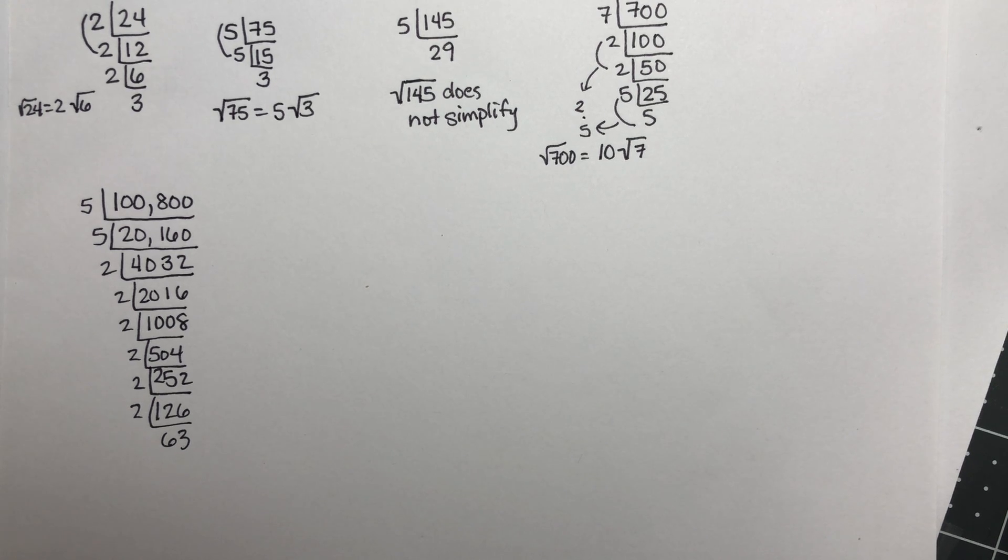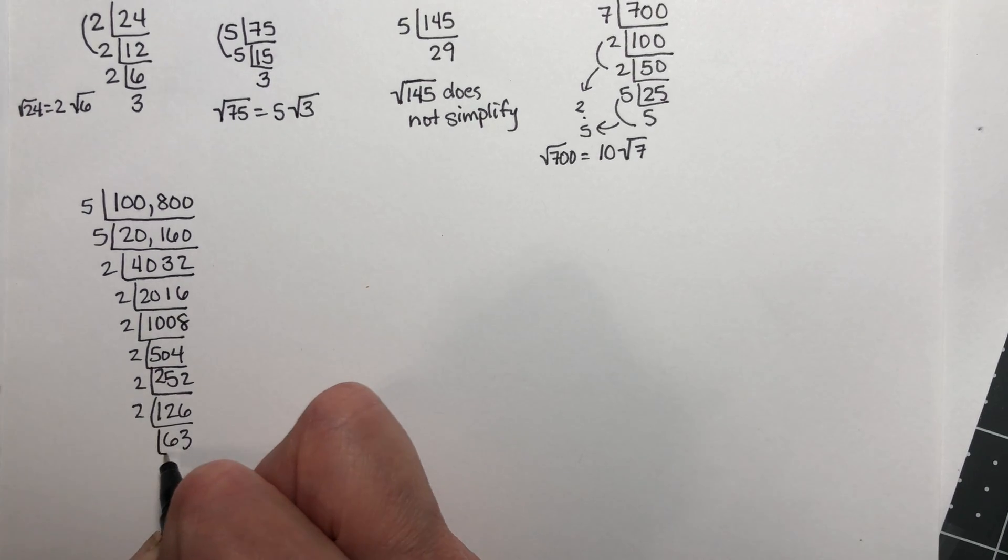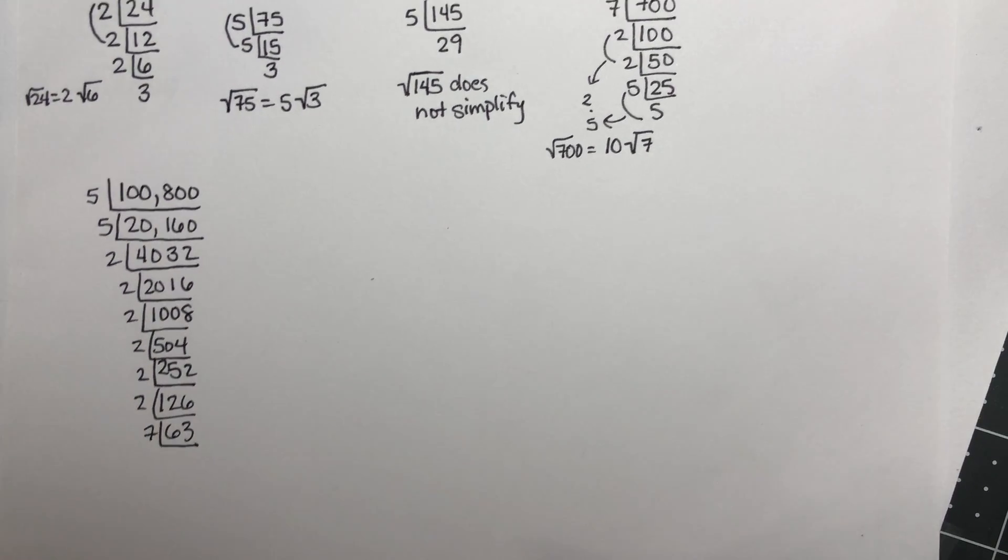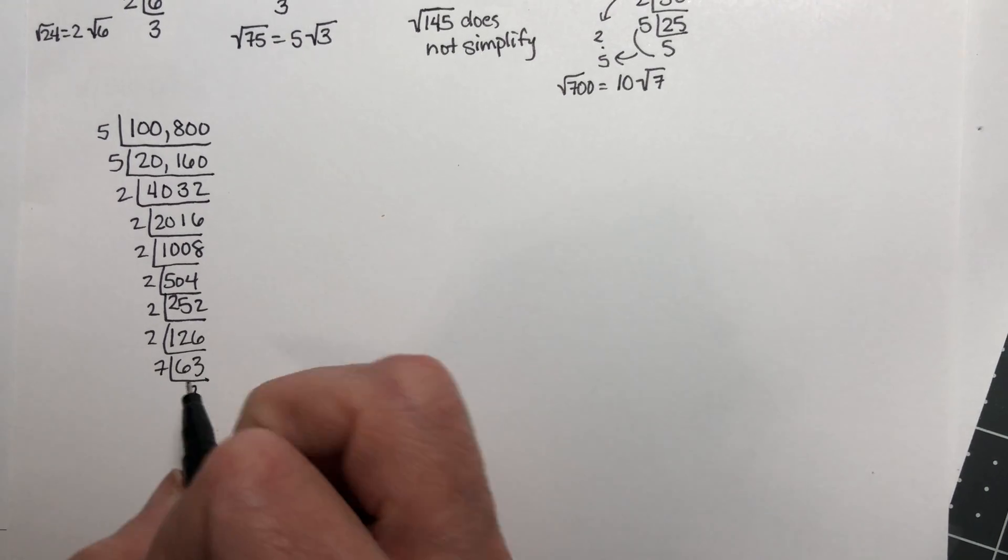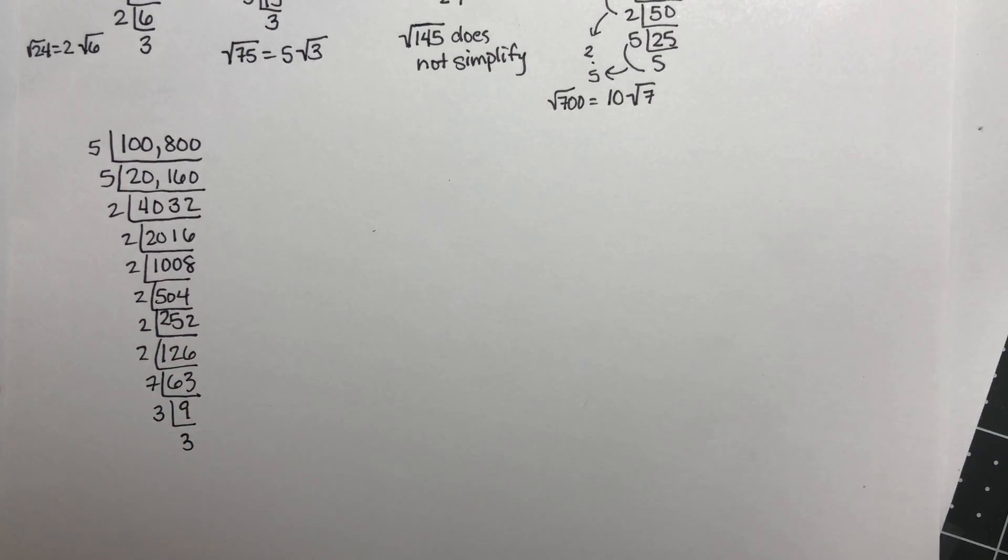Not divisible by 2 anymore. 63 is 7 times 9. So 7, 9, and 9 is 3 times 3. So that's a lot.